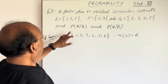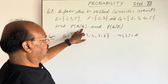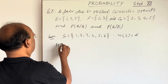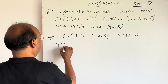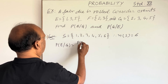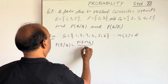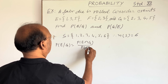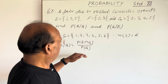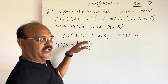Now we have to find the probability of E conditioned to G. The formula is: probability of E conditioned to G equals probability of E intersection G divided by probability of G. So we have to first find out the values of the numerator and denominator.